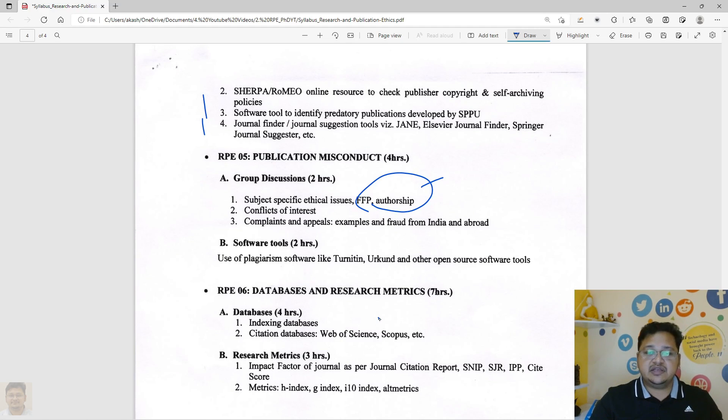Then on the different databases also we'll be discussing indexing which is very much important like citation databases or indexing like Web of Science, as you can see, Scopus. Then I will take you to the Clarivate and we will see all the things on the Scopus also.